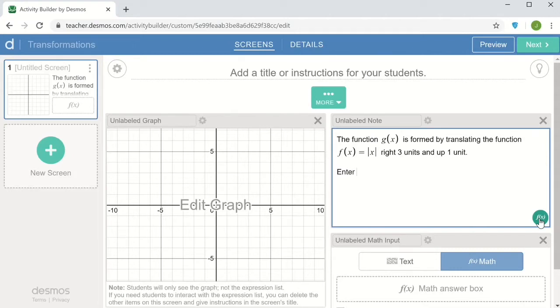And then to prompt the input, maybe I'll add enter the formula for the g of x function. Again, to create math formatting, we can click on the little f of x button in the bottom right.